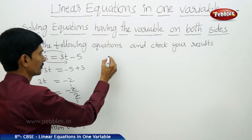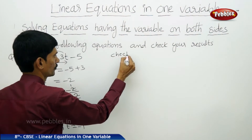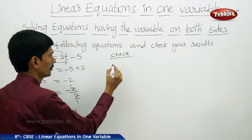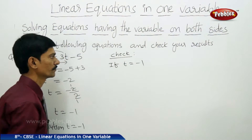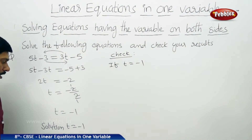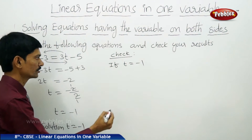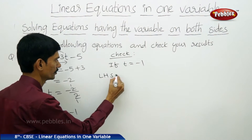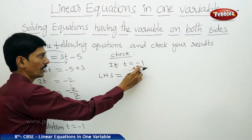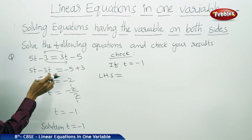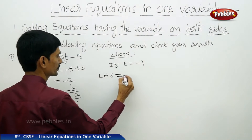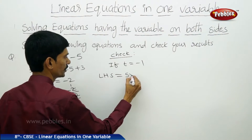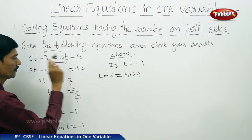Now let us check the result. If t equals to minus 1, we check whether the solution is correct or not. We substitute t equals minus 1 into LHS. The LHS is 5t minus 3. Substituting t equals minus 1: 5 into minus 1, minus 3.